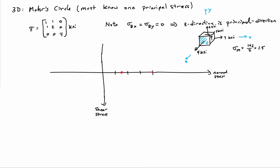Now I'll go ahead and draw the circle for the XY plane. I'll plot the stress on the X face, which is 1 KSI normal stress and 1 KSI shear stress. Remember, shear goes positive down. And the radius of that circle is 1.12, which I can calculate from the geometry of the points I've already drawn.